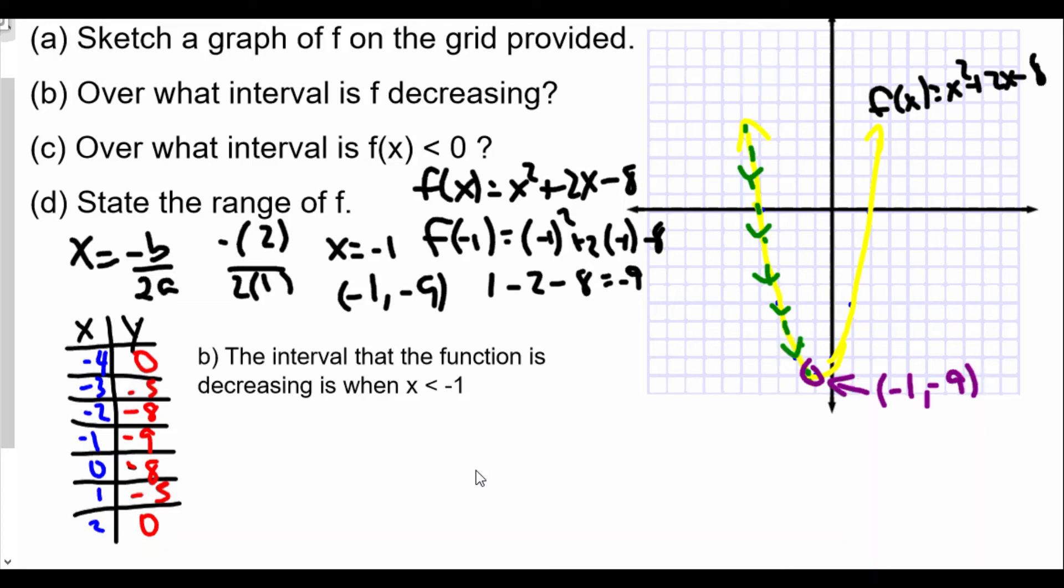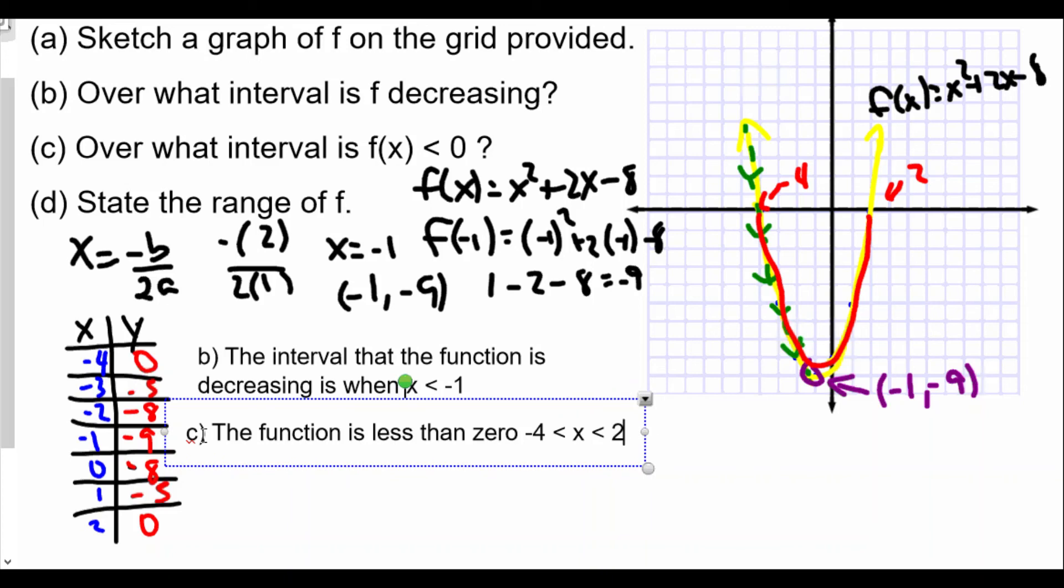What interval is f(x) less than zero? Well, in this case, we see all of this here. In this case, all of this portion of the graph is below the x-axis. And that will be from, and remember in this case, this is at x is equal to -4. And this is x is equal to 2. So we'll say in this case, for part C, the function is less than zero from -4 < x < 2, not equal to because that's when it equals zero.